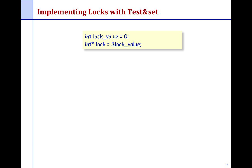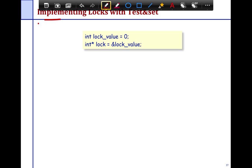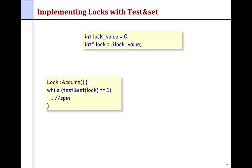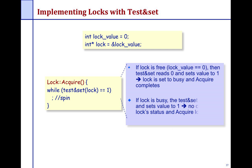You have two variables: a lock value which is zero, and the lock pointer itself. The lock acquire is simple — you try to test the lock, and if the lock is free (lock value zero) you read a zero, test that it's zero, and set the value to one. You keep spinning until the lock is busy.